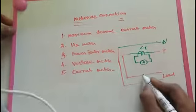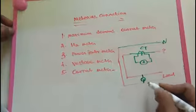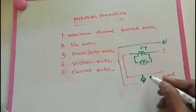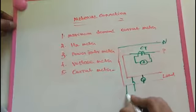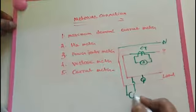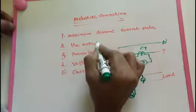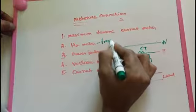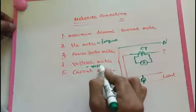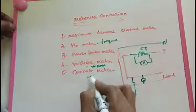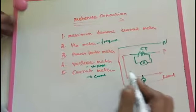If we connect a voltmeter between phase and neutral, or phase to phase — that is the purpose of the voltmeter connection. The hertz meter is also connected the same way. The hertz meter measures frequency, the voltage meter measures voltage, and the current meter measures current.